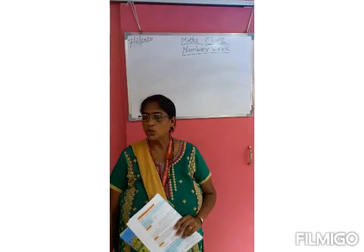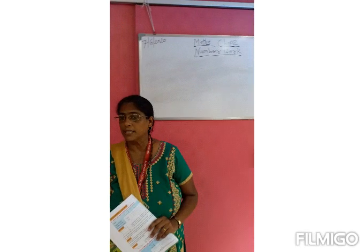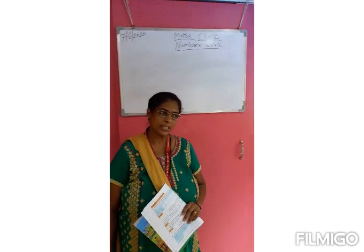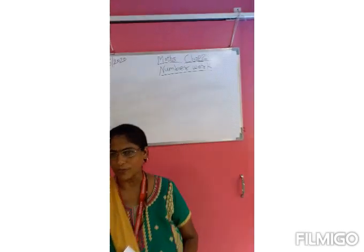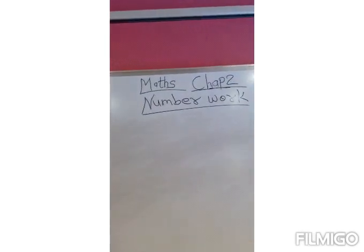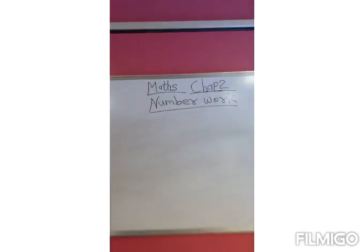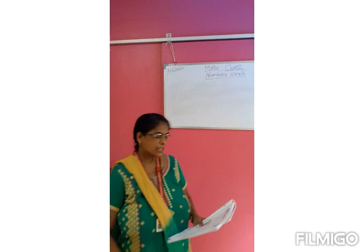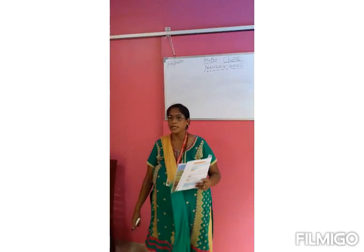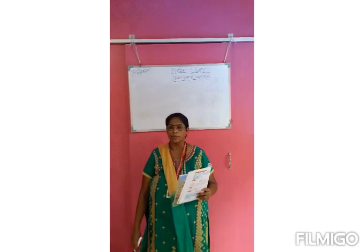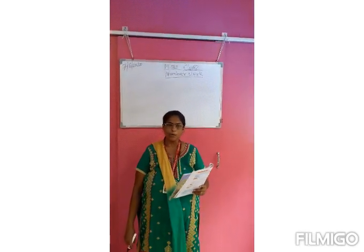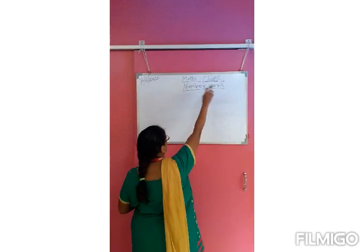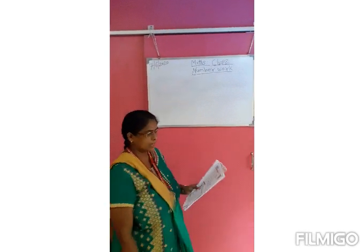You all know 2 ones tables, 3 ones — all of you know tables. Some of them know till 10, some of them know till 15 tables. Okay, come on. Now, today we are going to study Chapter 2, Number 1. I have written on the board Chapter 2, Number 1.